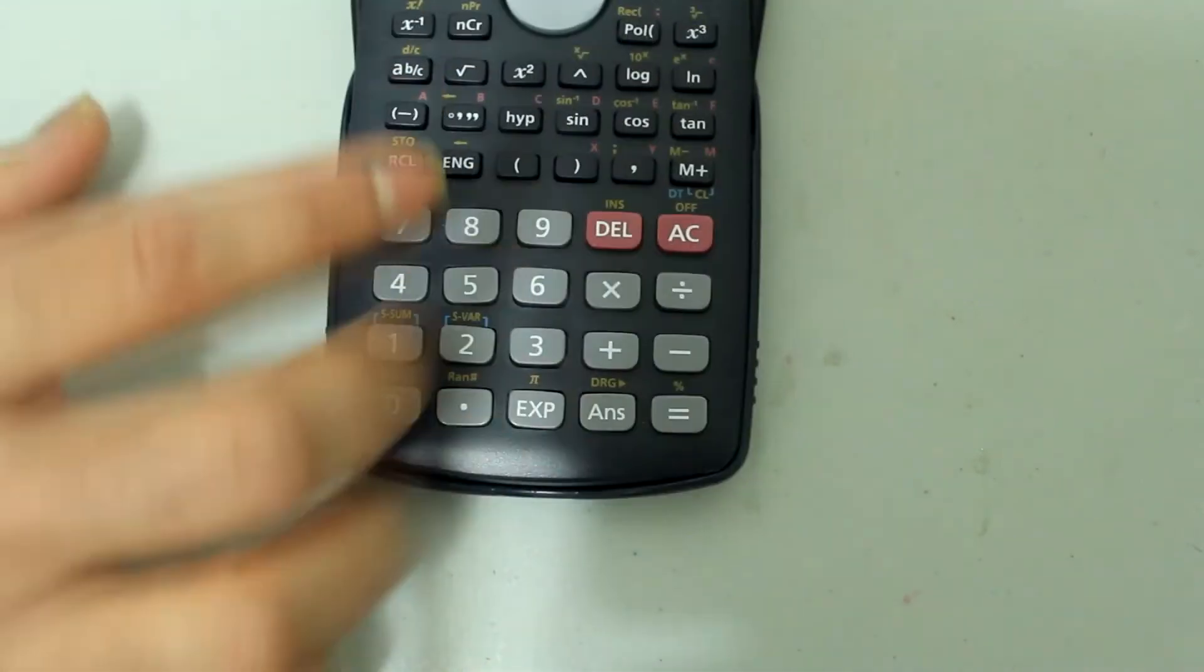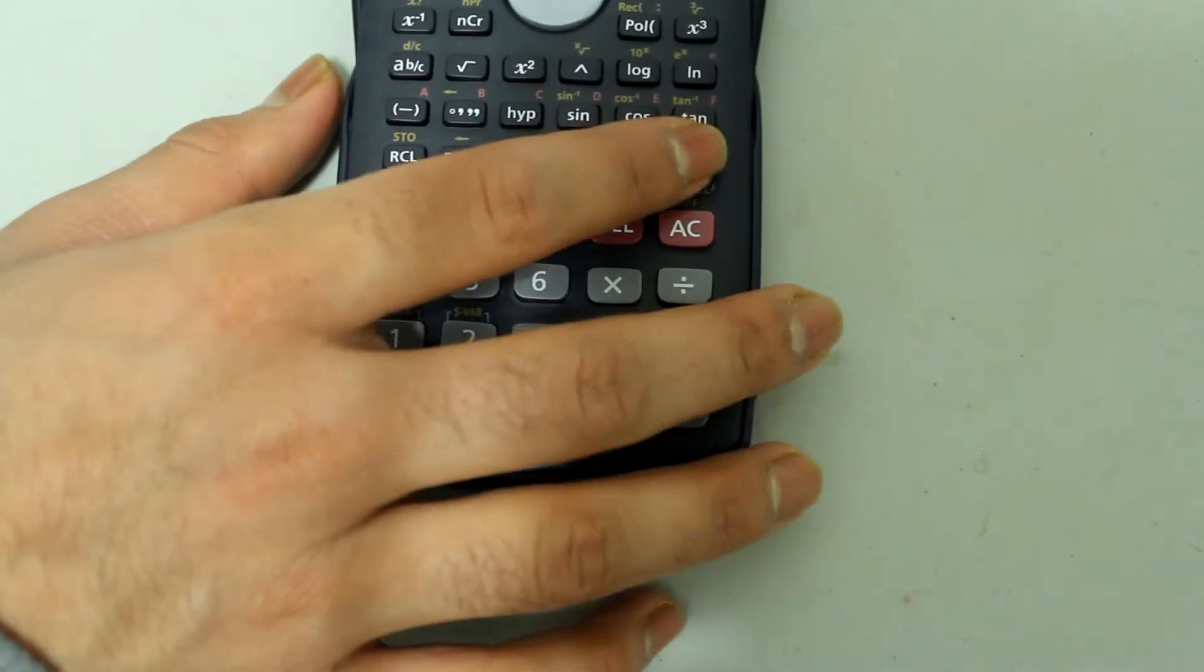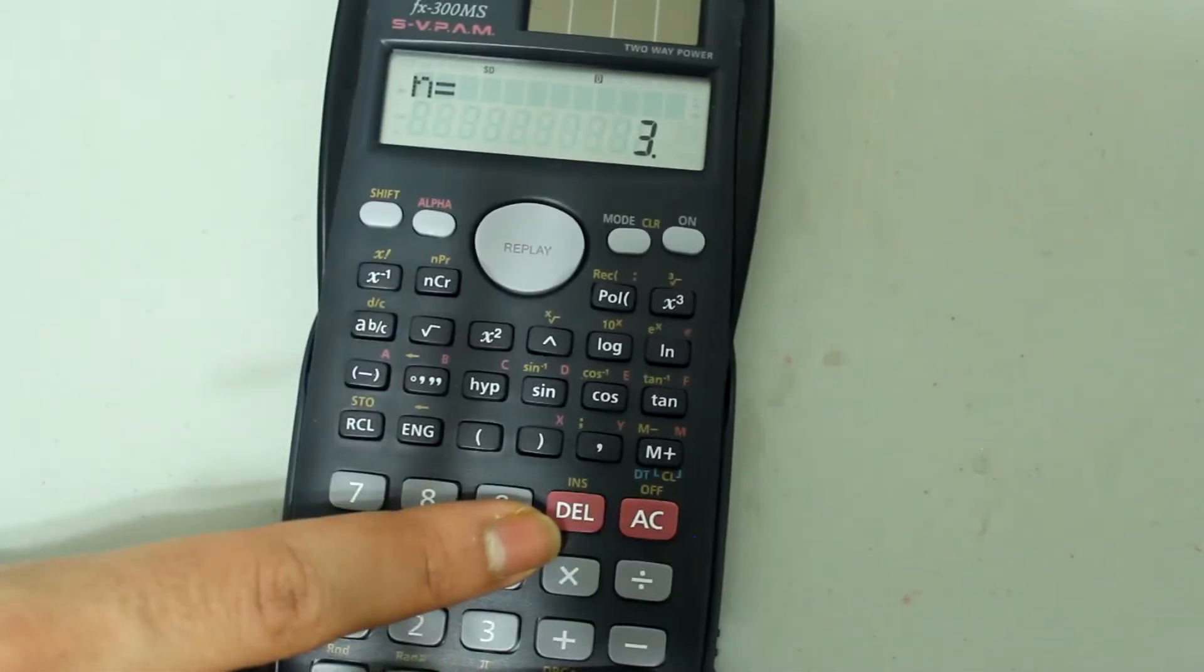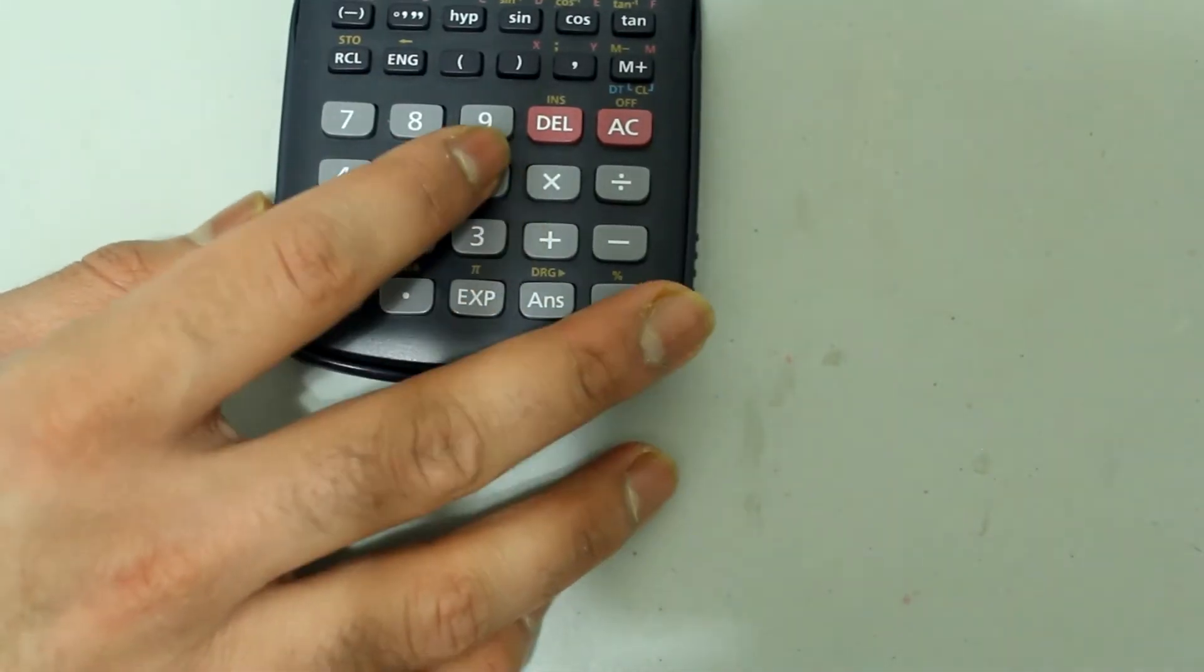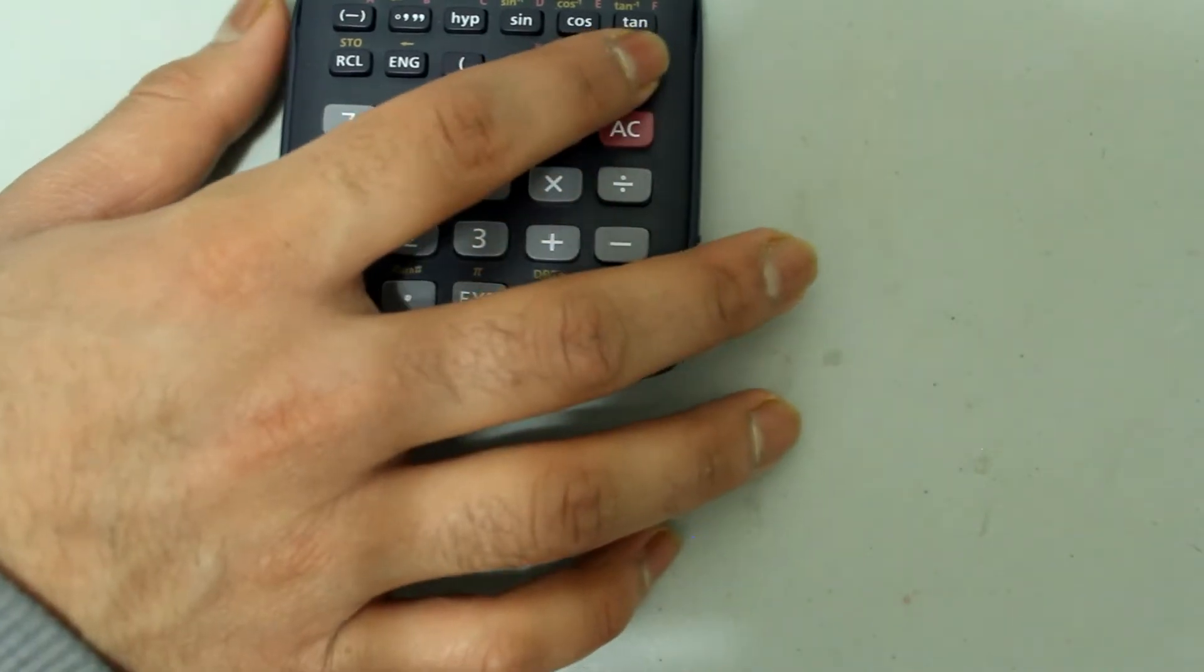Do the same for 8. Press 8 and then M plus and it's letting you know that N is 3. Press 6 and M plus.